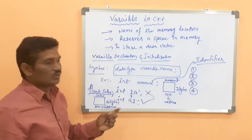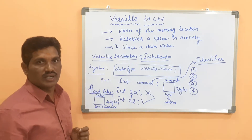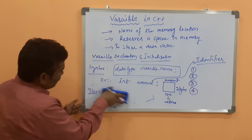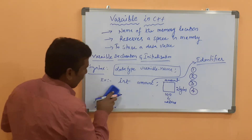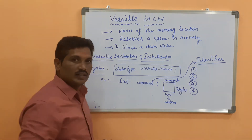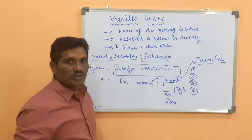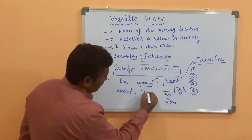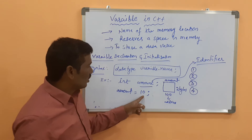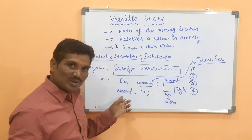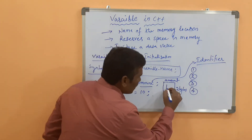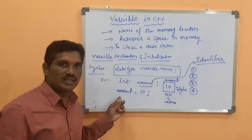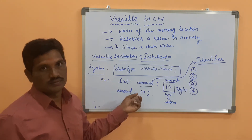Once we have done the declaration of the variable, you should initialize the value of your variable. How do you initialize the value of your variable? The syntax is: variable name equals initialization value. For example, the variable name is 'mo', so 'mo = 10' followed by semicolon. 'mo' is the name of the variable or the name of the memory location. If you initialize the value, it will be stored there. The value of 'mo' becomes 10.